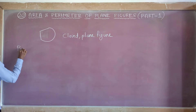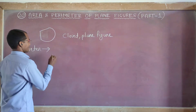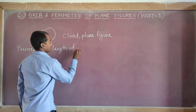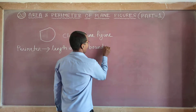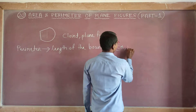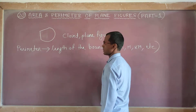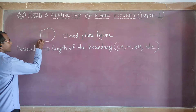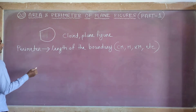Its perimeter means the length of the boundary. The length of the boundary is measured in cm, meter, kilometer, etc. So if I start from here, the whole length of the boundary — that is called perimeter.